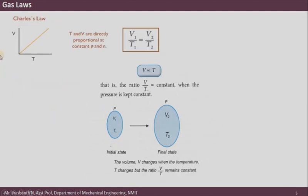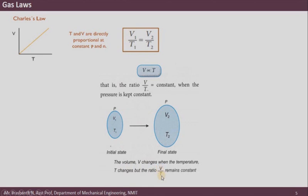Charles' law states that the volume of a fixed amount of gas is directly proportional to its absolute temperature at constant pressure. When pressure is kept constant and volume increases, temperature also increases. The ratio of volume to temperature always remains constant: V1/T1 = V2/T2.